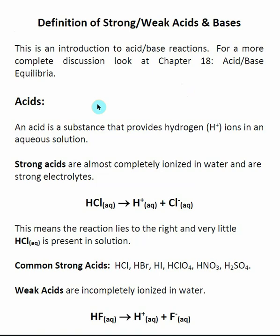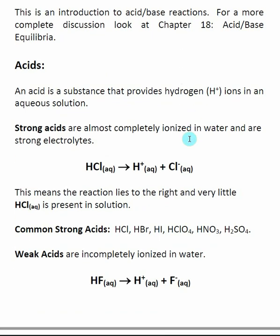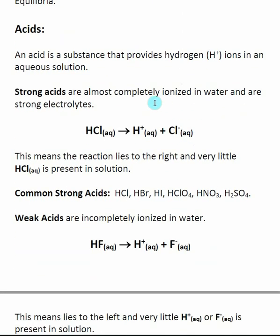There are a few different ways that we can define acids and bases, but we're going to start off with the simplest definition. The simplest definition of an acid is something that produces H⁺, or a hydrogen ion, when it is placed into an aqueous solution. For strong acids, strong acids are almost completely ionized in water. If I put HCl, which is a strong acid, into an aqueous solution — into water — it's going to dissociate almost completely into its ions, H⁺ and Cl⁻.